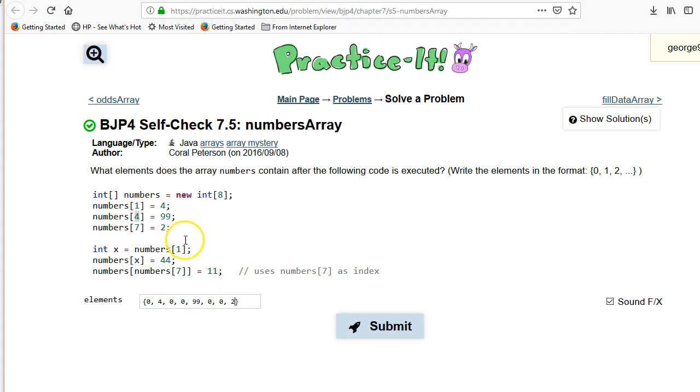Okay, so now, getting a little bit more complex. So, first, they set a variable x equals numbers of 1. Okay, so x equals 4. I'm just going to write this off to the edge. x equals 4, just so we know what we're talking about here.